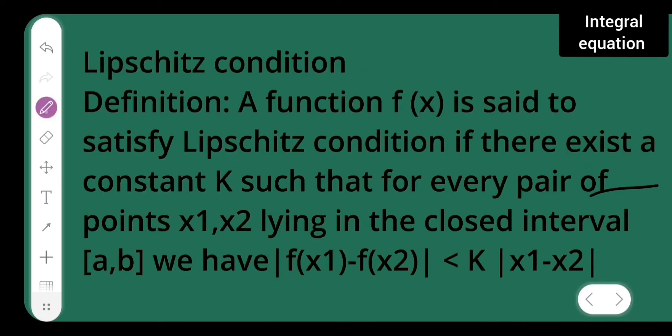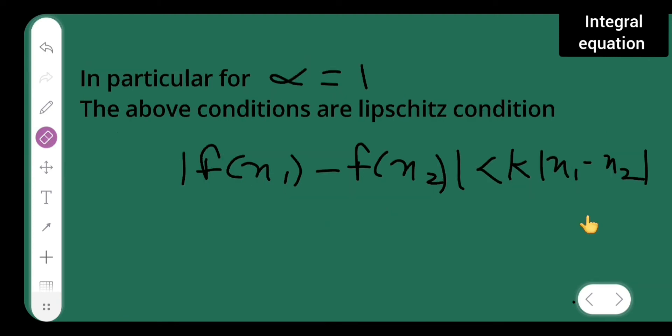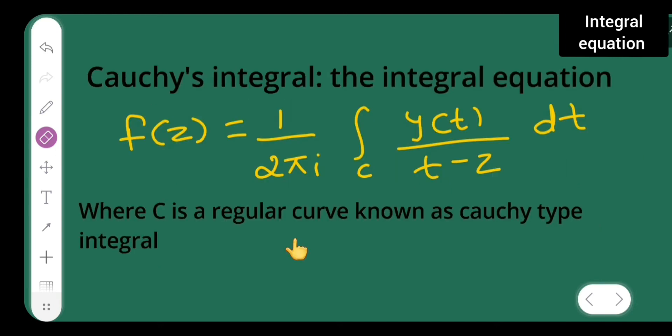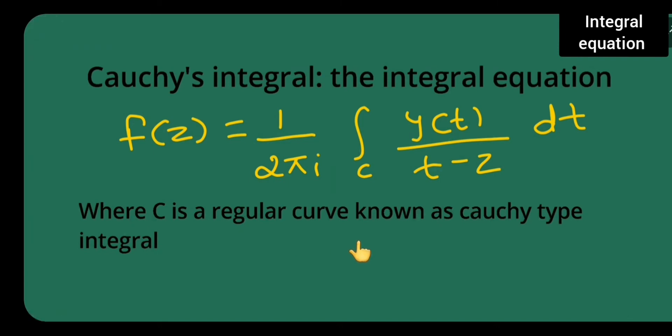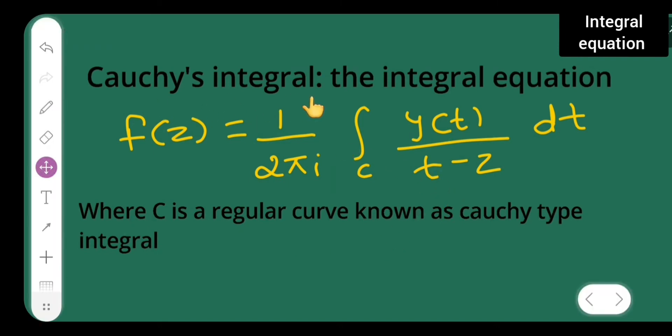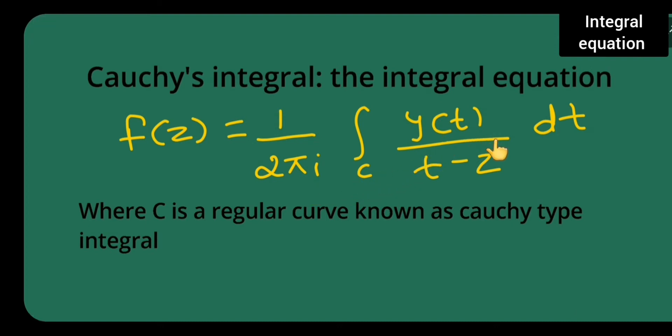I have given you all the statement of Lipschitz condition, you all can go through this. Next, I will move to Cauchy's integral formula. The integral equation f(z) = 1/(2πi) ∫_c [y(t)/(t-z)]dt. Here, c is the regular curve and this integral will be known as Cauchy type integral. This is very important concept.